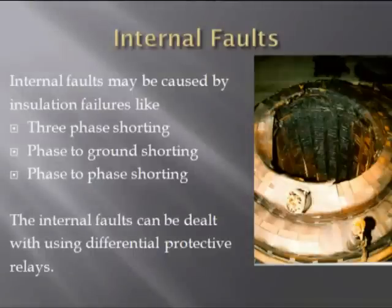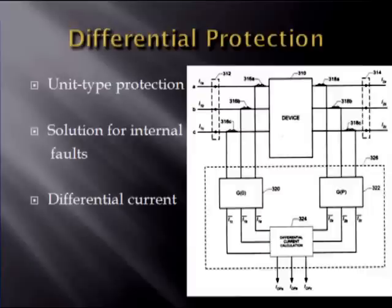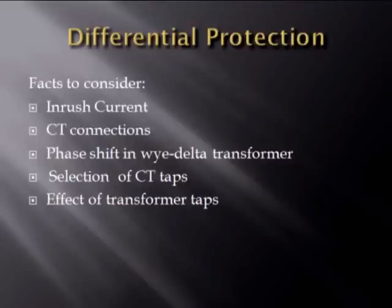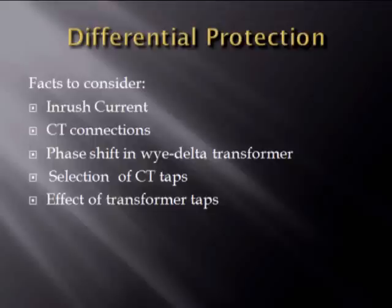Internal faults can be dealt with using differential protective relays. Differential protection is a unit type protection for a specified zone or piece of equipment — in this case, the transformer. It is used only in the case of internal faults and trips when the difference between the input current and output current is high. Key considerations for differential protection include: inrush current, current transformer connections, phase shift in Y-delta transformers, selection of CT taps, and the effect of transformer taps. Magnetizing inrush current results from any abrupt change of the magnetizing voltage, and may also be caused by an external fault. The CTs connected must cater for the phase shift between Y-to-delta transformers, so they are connected opposite to the configuration of the transformers — for example, if you have a Y-delta transformer, the CT will be connected delta-to-Y.